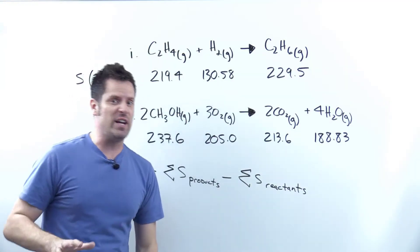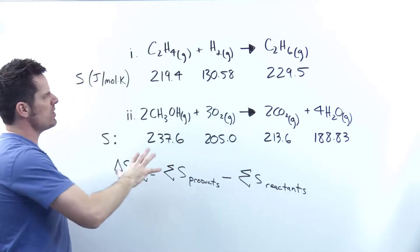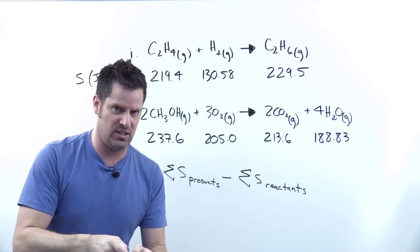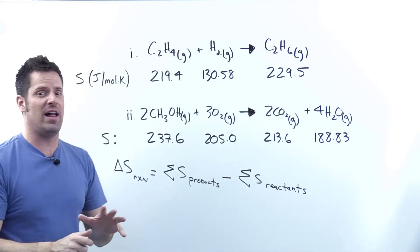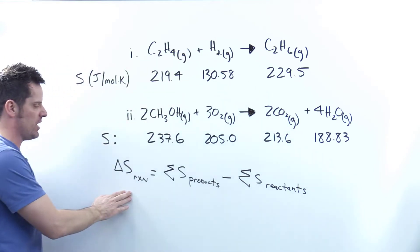As I pointed out in an earlier video that I'll link to floating over my head and in the description below, in order to determine the delta S, that is the change in entropy value of any chemical process or reaction, we use this equation here.